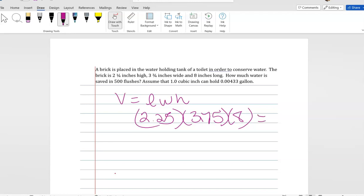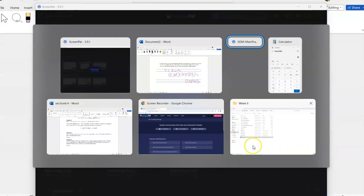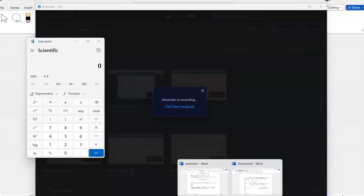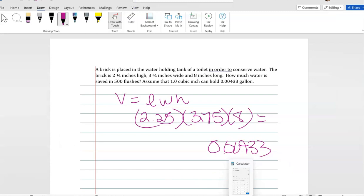We're going to get this answer, and then we are going to times that by 0.00433 to find out how many gallons we're saving. Well, after we do 500...